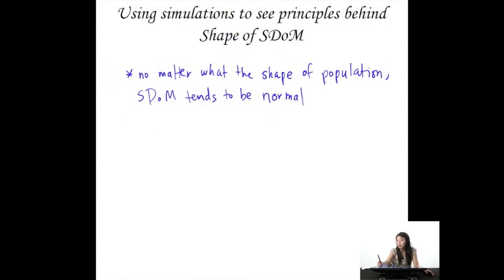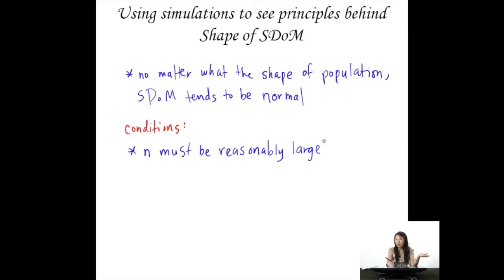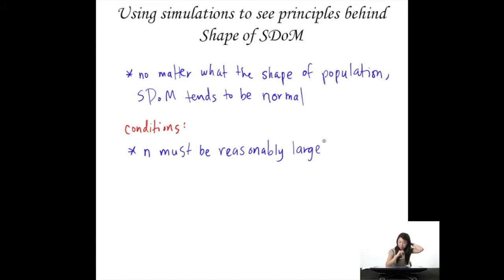So what we see is that as long as n tends to be reasonably large, you tend to get a normal sampling distribution of the mean. There are a couple of conditions. First: sample size n must be reasonably large. Two is too small, five is a little too small, 10 starts looking better. A lot of times people use a rule of thumb like 40 to be reasonably large — but that's just a rule of thumb.